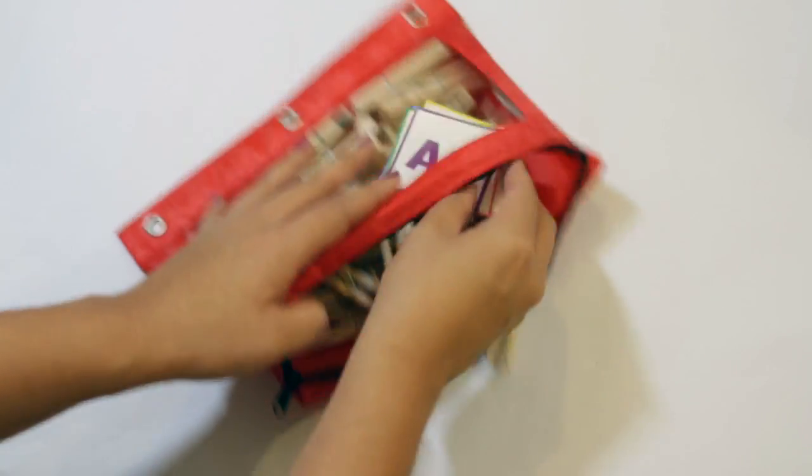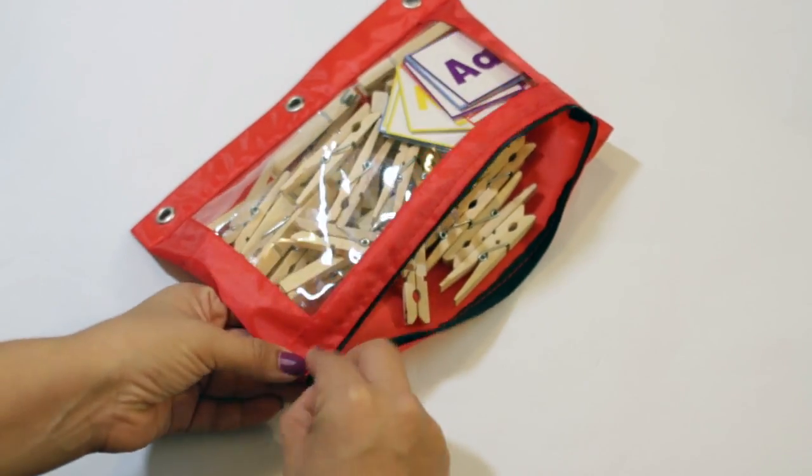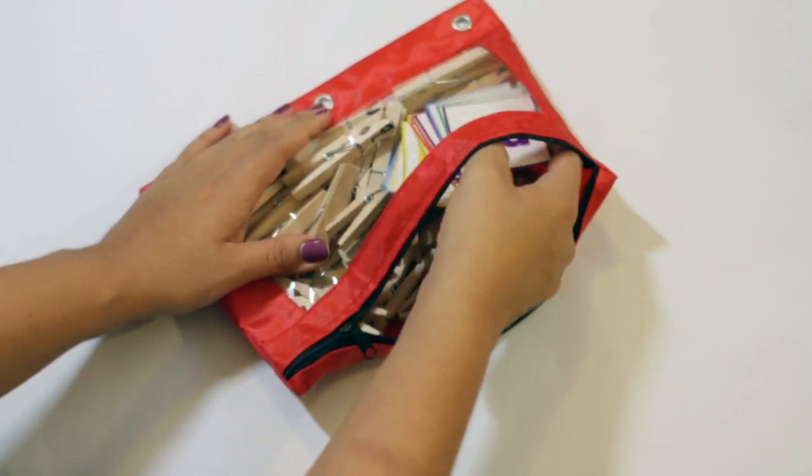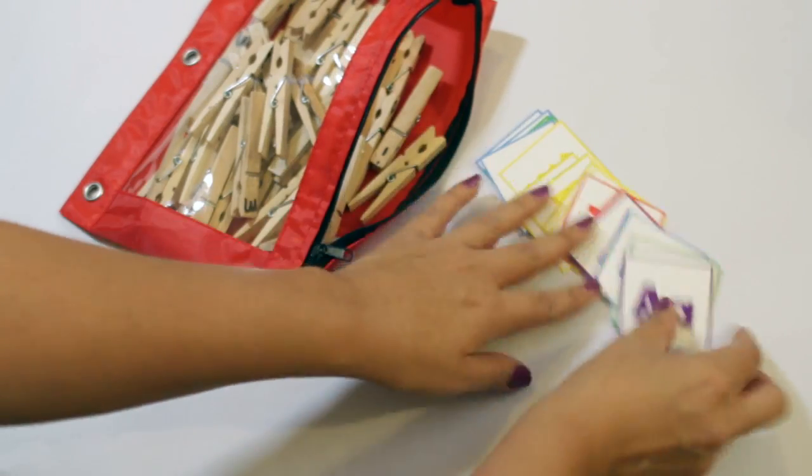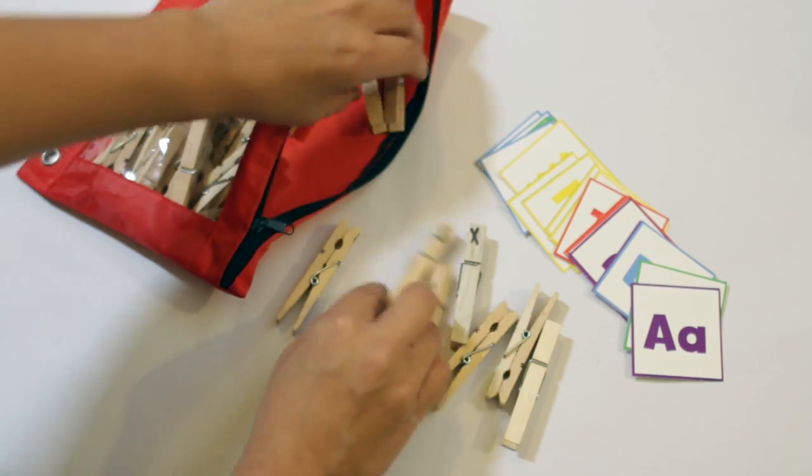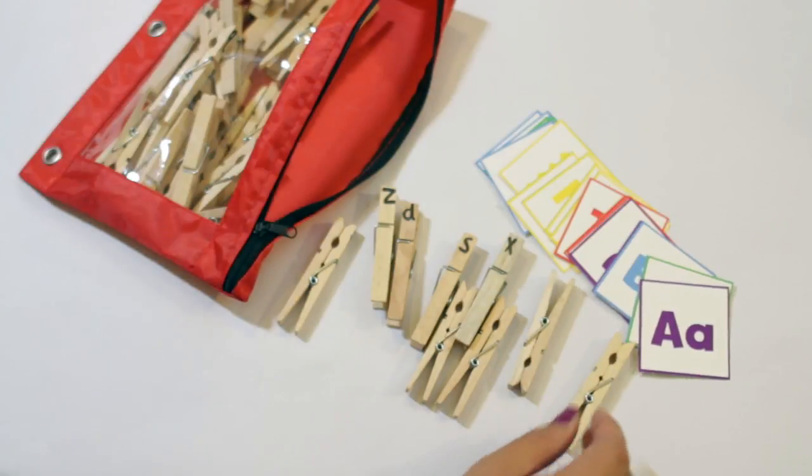And you are off and ready, all nice and contained inside. So that's all I have for today on the alphabet matching with clothespins. Make sure to click subscribe so you can see more videos like this, and to click that like button, give me a thumbs up to show your love. Talk to you soon.